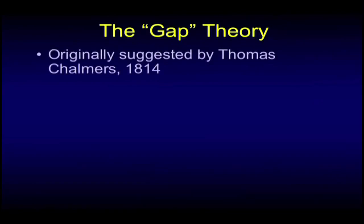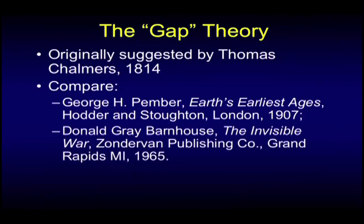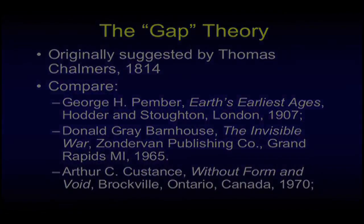The gap theory is first suggested, as nearly as we can tell, by Thomas Chalmers in 1814. Perhaps the classic on this subject is George Pember's book, Earth's Earliest Ages, published in London in 1907. Donald Gray Barnhouse's The Invisible War is one of my must-reads — a fabulous book on this whole subject. And Arthur Custance, Without Form and Void, published in 1970, and there have been others.